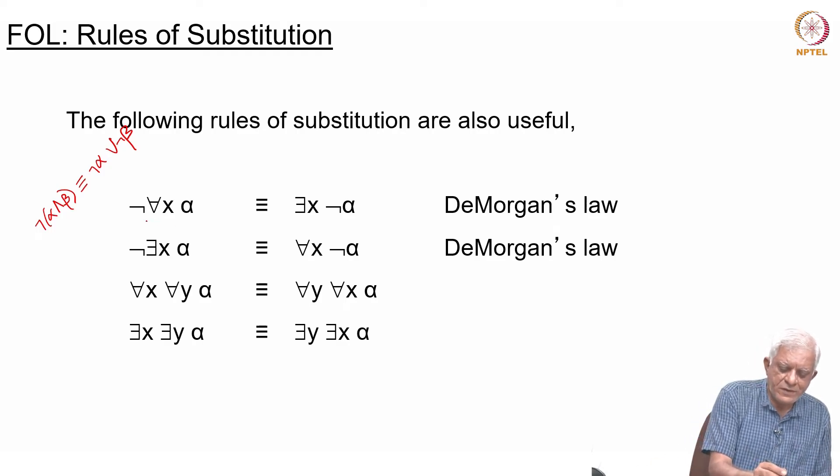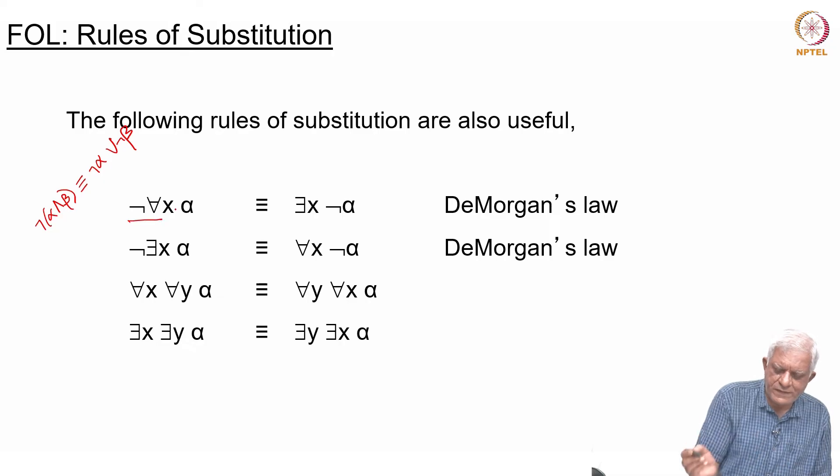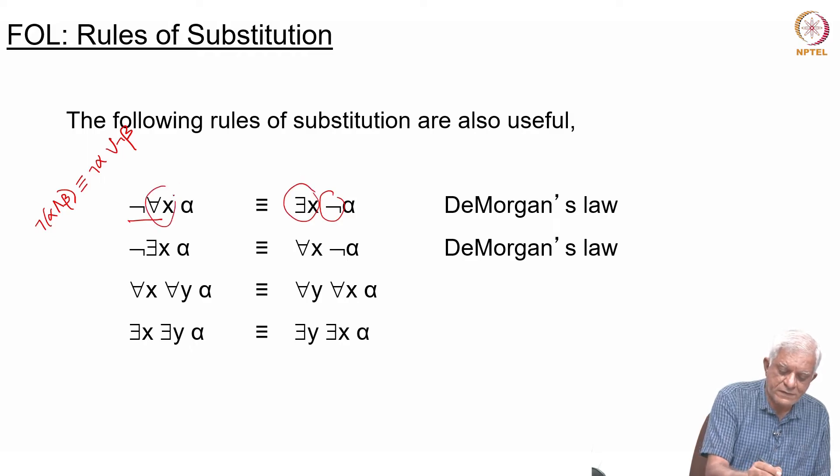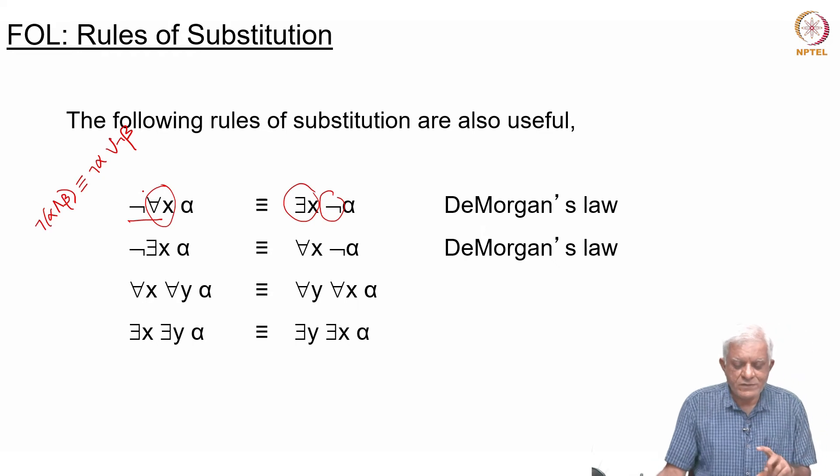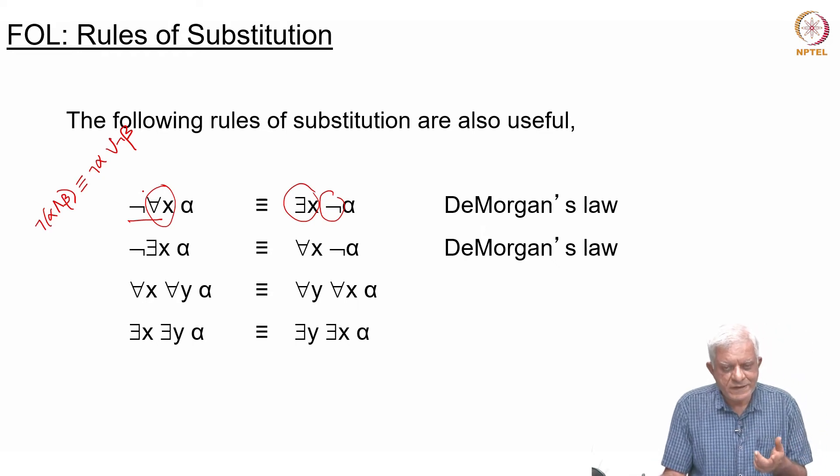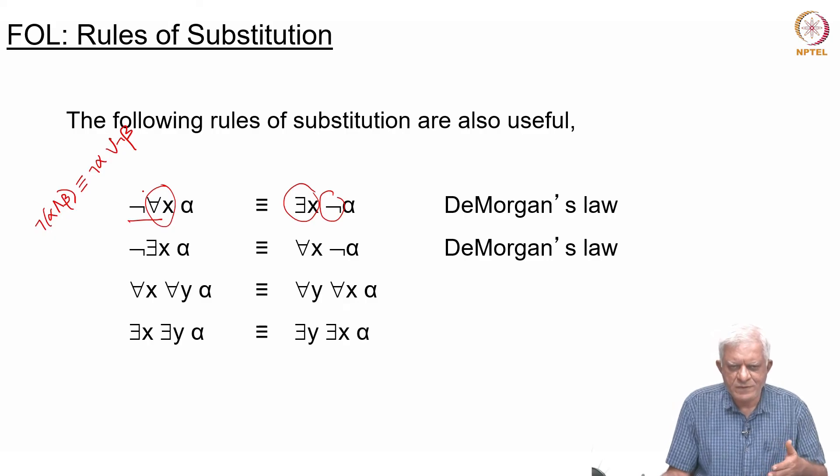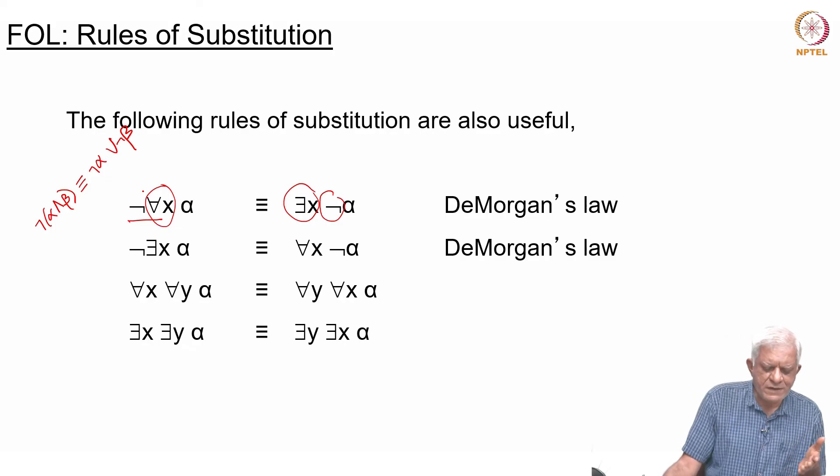A similar thing is happening here. When you push this NOT across the quantifier, it goes to the other side of the quantifier, but it changes the nature of the quantifier. You started with for all x, and then you ended up with there exists x, and the NOT has moved inside.